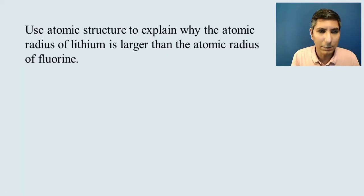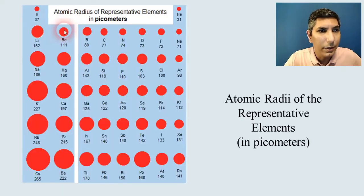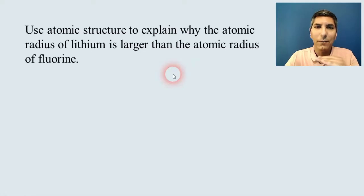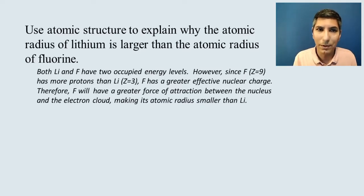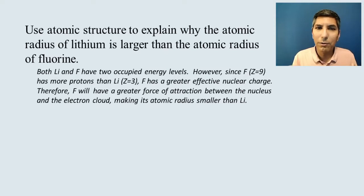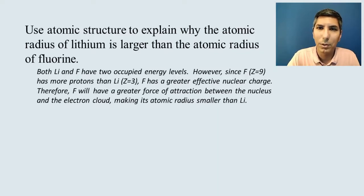This is something the College Board likes to ask on their exam. Let's use atomic structure to explain why the atomic radius of lithium is larger than that of fluorine. Both atoms have two occupied energy levels. However, since fluorine has many more protons than lithium, fluorine has a greater effective nuclear charge, resulting in a greater force of attraction between the nucleus and its electron cloud. Fluorine is able to pull in those electrons more tightly, making its atomic radius much smaller than lithium's.